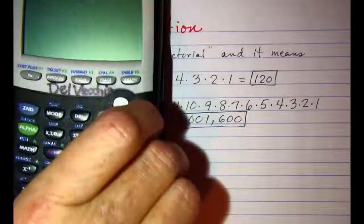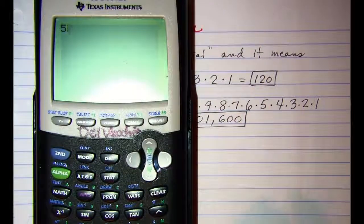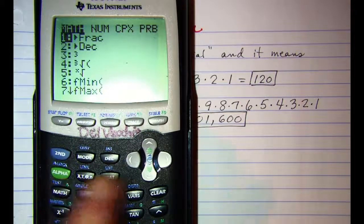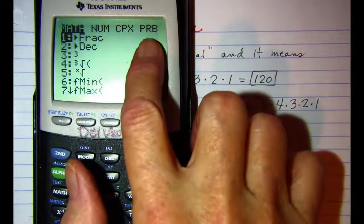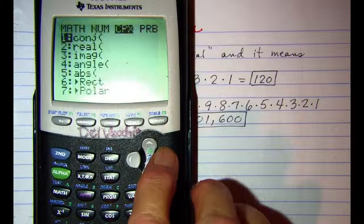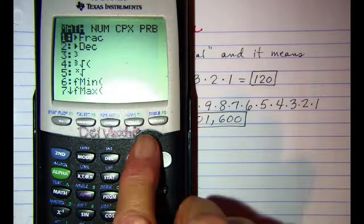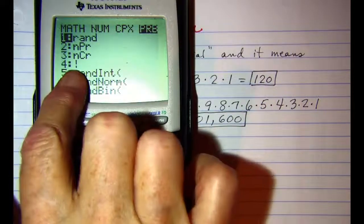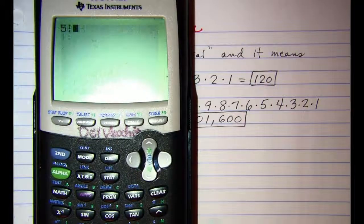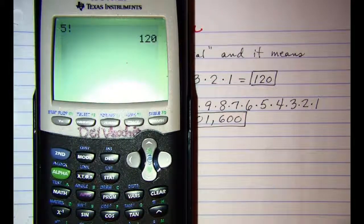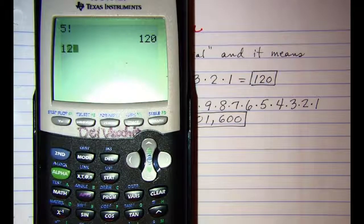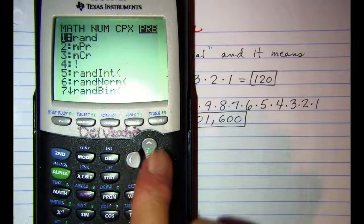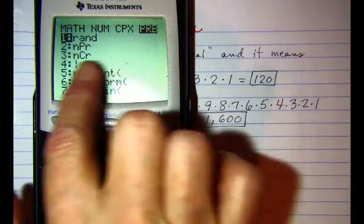On this calculator, again 5 and we want the math button, and we want to come over to the probability option. Option 4 is our factorial. So 120. And then when we did 12 and hit math and then our probability option and then factorial.